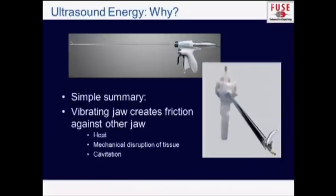The device causes its effects in three different ways. Heat is the most obvious thing that happens. When you have a jaw of the device vibrating back and forth at this ultrasonic frequency, it causes friction when it rubs against the other jaw. That generates heat, and that causes the effects that we have already heard about today. There's also some mechanical disruption of the tissue, and this is something that you don't really get with the cautery. If you can imagine taking a chopstick and rubbing it against tissue enough, it's going to cause mechanical disruption — and that happens with ultrasonic devices.